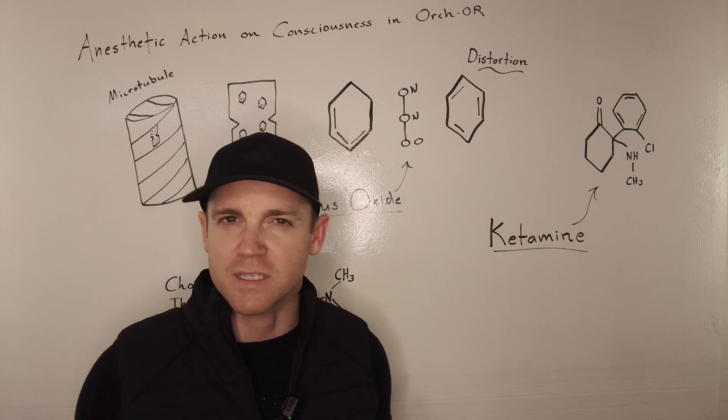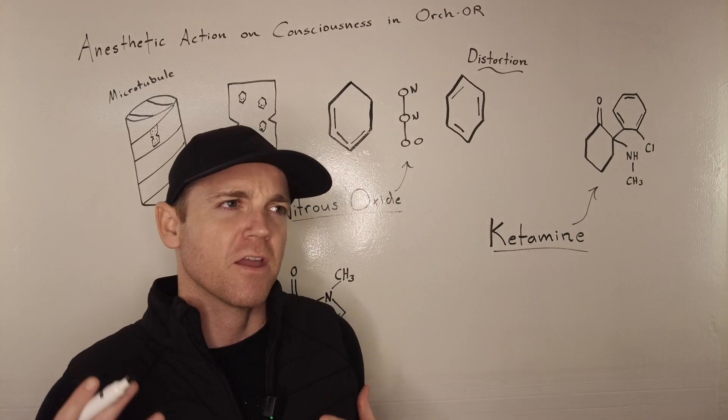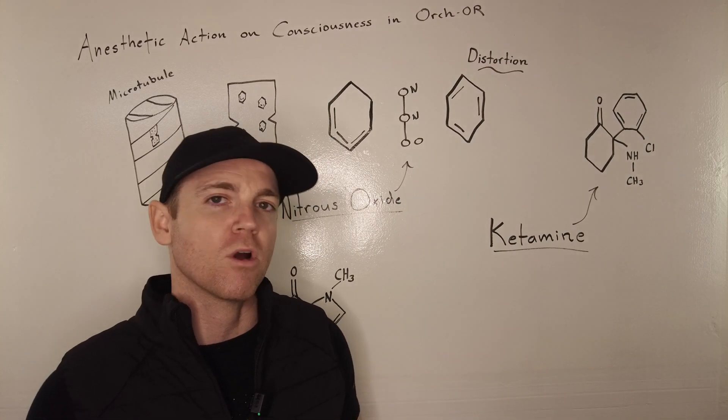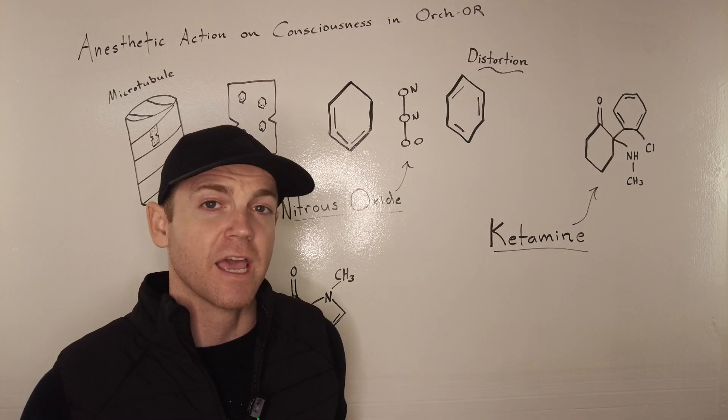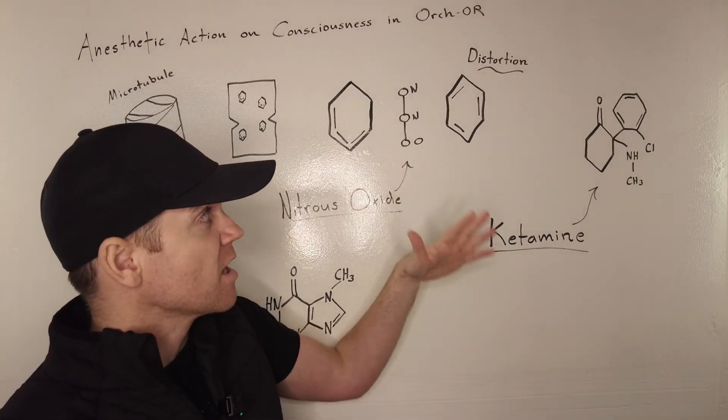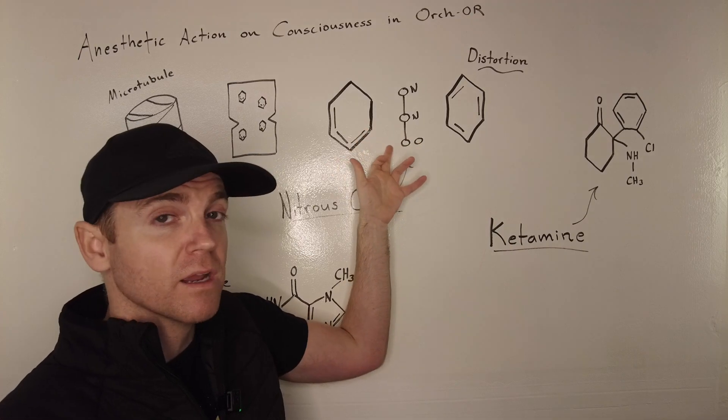So you can't think of a neuron as this cartoon thing where anesthetics go into the synapses and block activity because anesthetics only act in certain areas, and they have certain effects, and they're not always the same all the time. So there's some nuances to anesthetics that do point to the Orch-OR model being more accurate as a framework for understanding how anesthesia works.